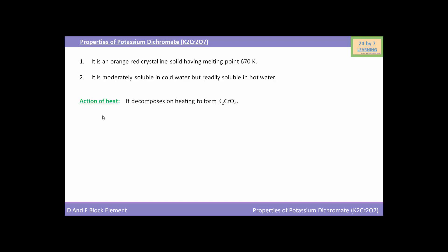Now we will see the action of heat on potassium dichromate. It decomposes on heating to form potassium chromate. You can see K₂Cr₂O₇, i.e. potassium dichromate, on heating decomposes into potassium chromate K₂CrO₄.